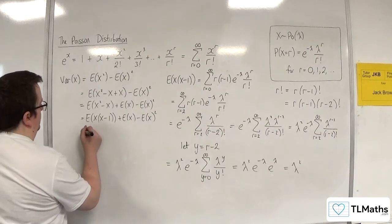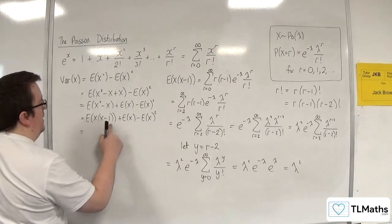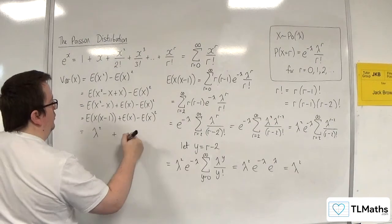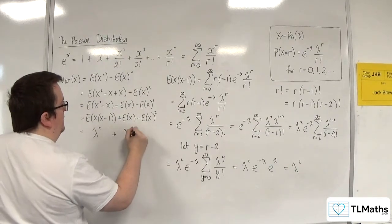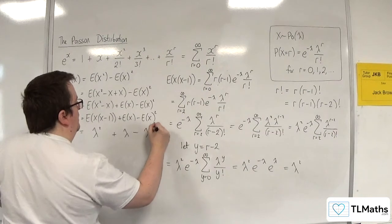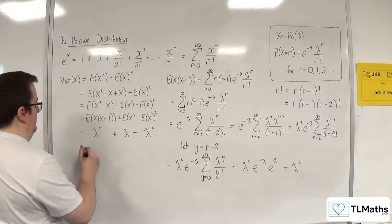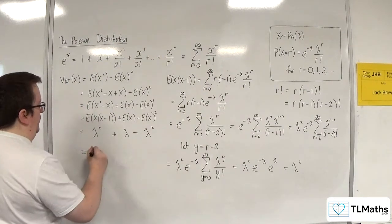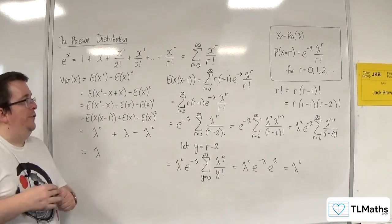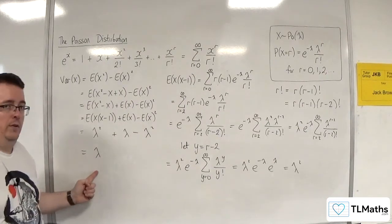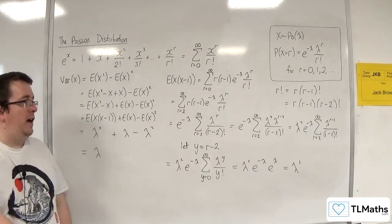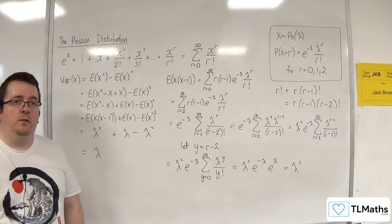So what I've shown is that E of X times X minus 1 equals lambda squared. I already know that E of X is lambda, and so E of X squared is lambda squared plus lambda. The lambda squareds cancel, and I get left with lambda. So that means the variance of X is equal to lambda also, and that's how we can derive it.